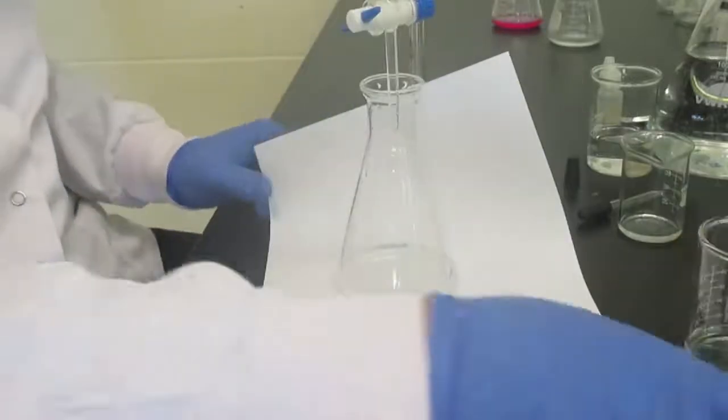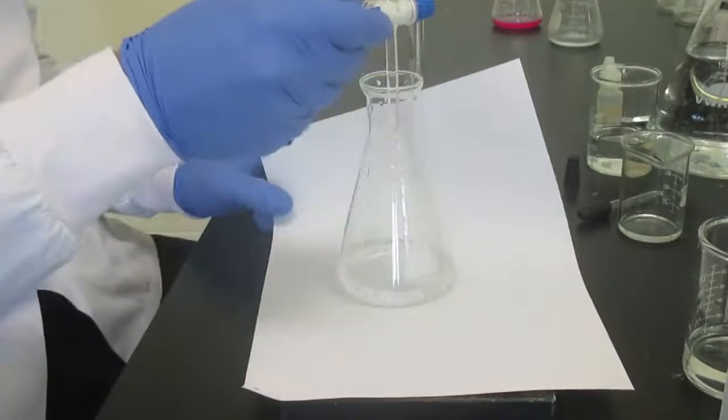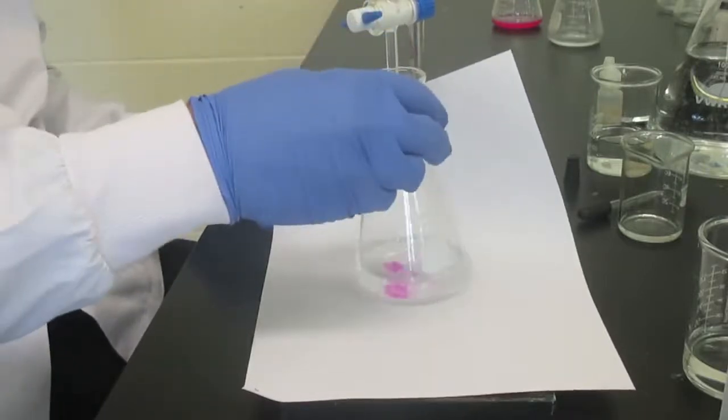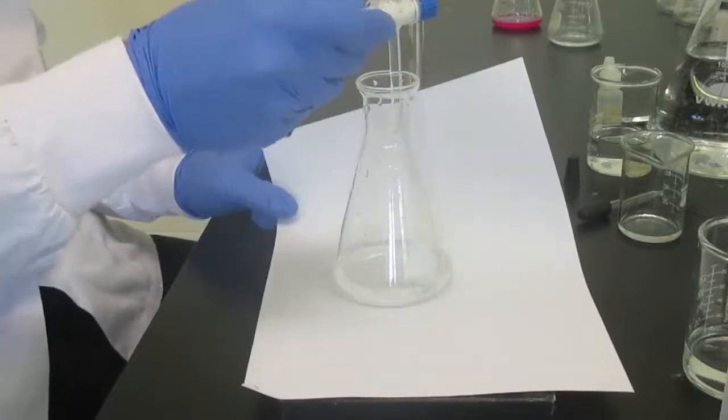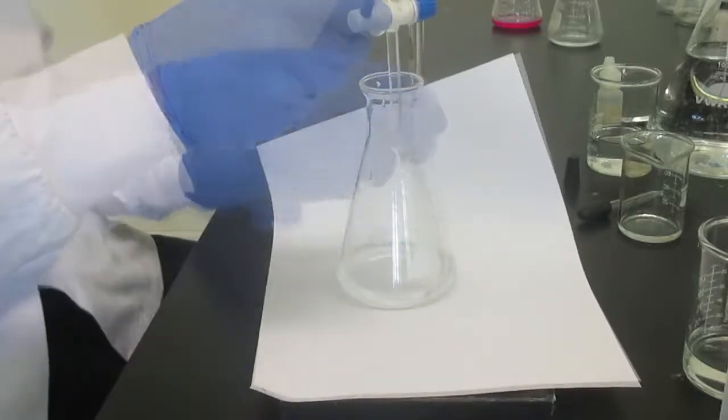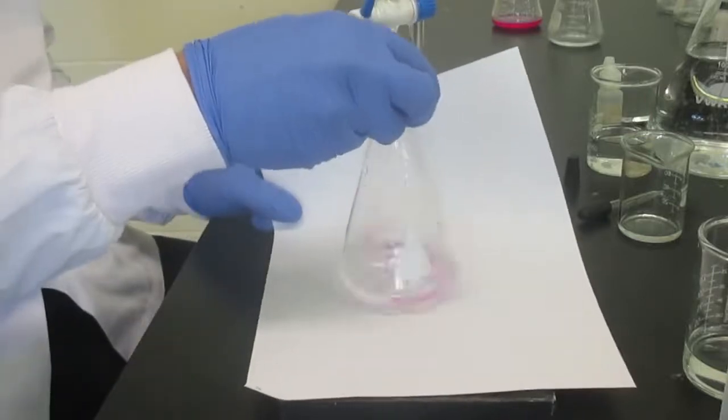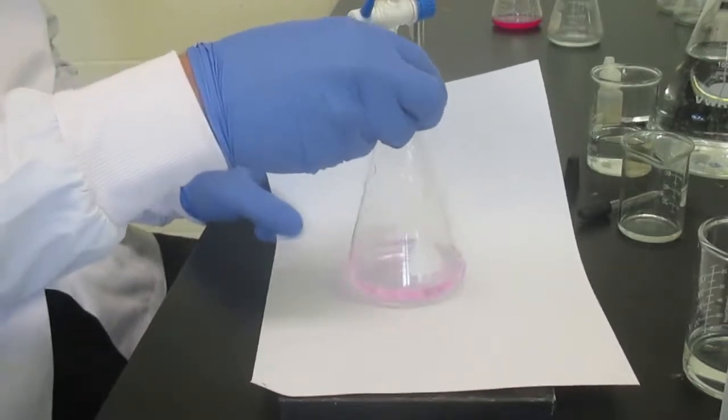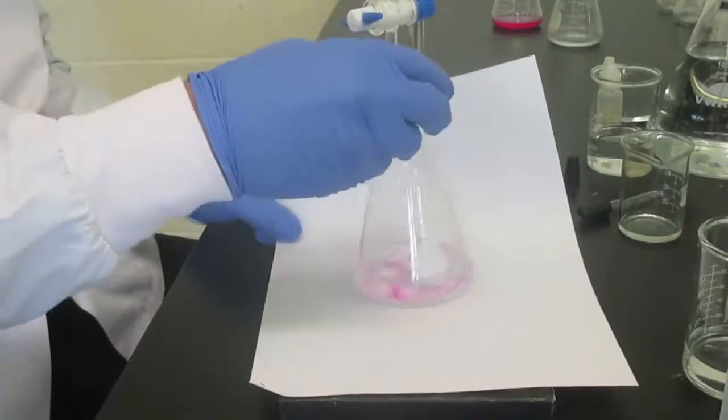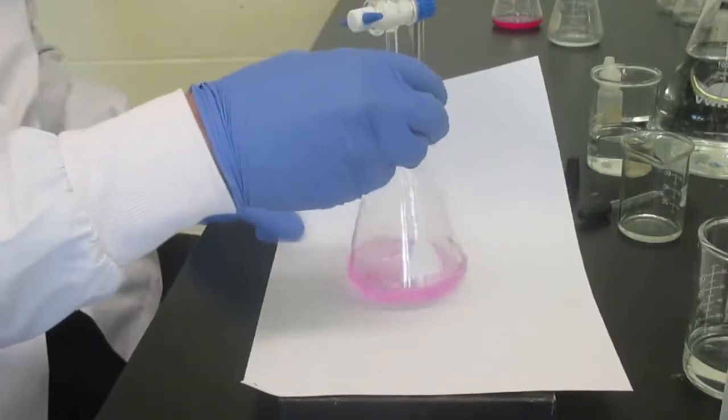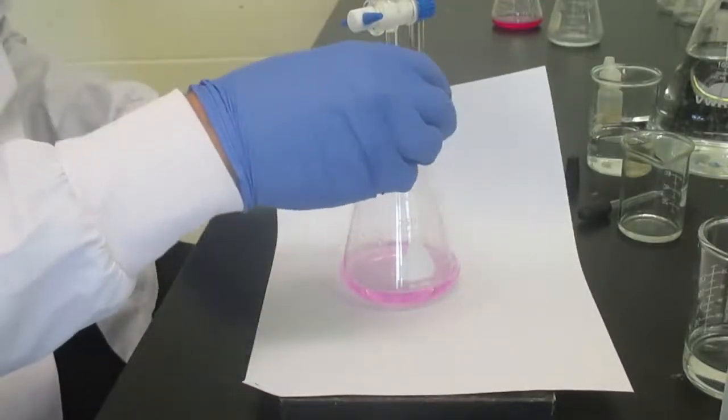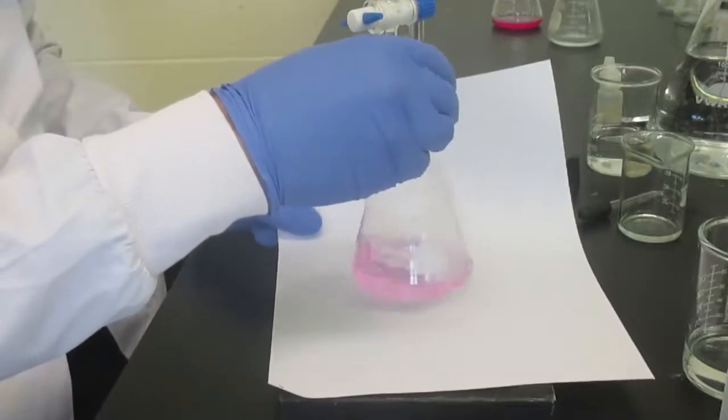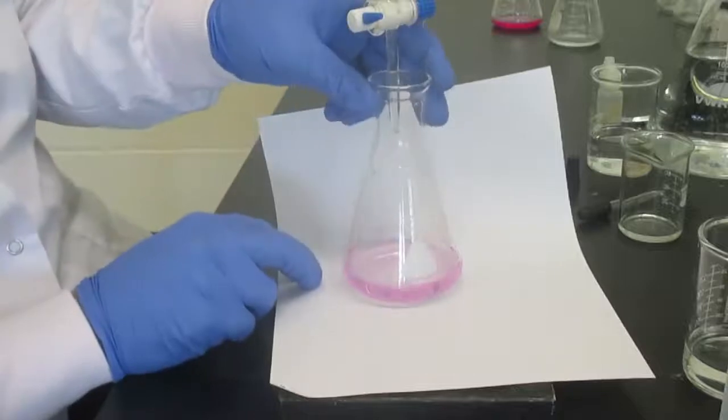I might want to do another rinse because sometimes the drops come onto the edge. They sort of fly to the walls of my flask, and I don't want that to interfere with my results. So now you can really see that the pink started to really spread before it would disappear.